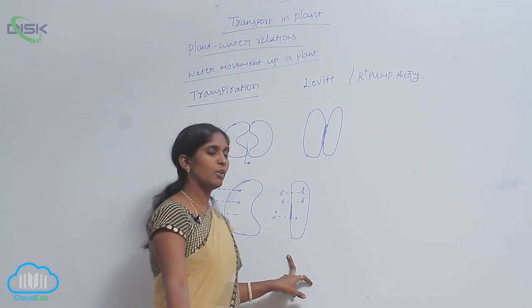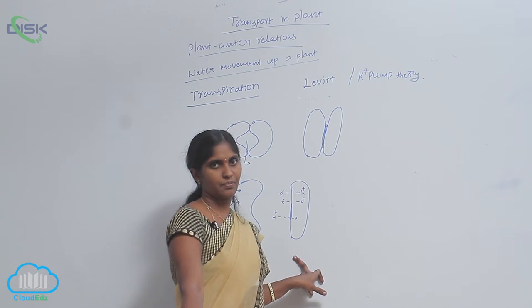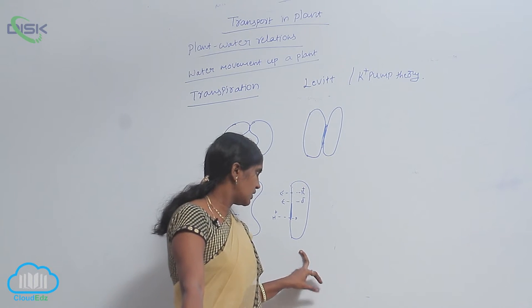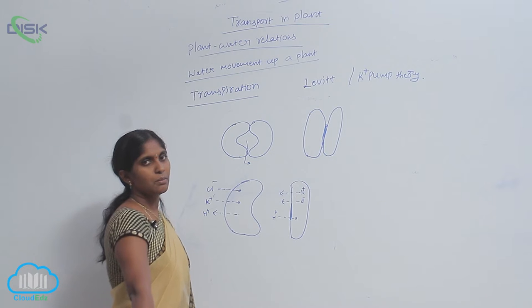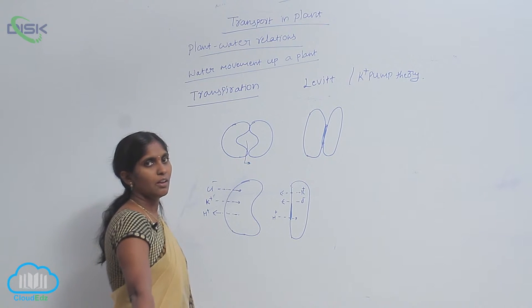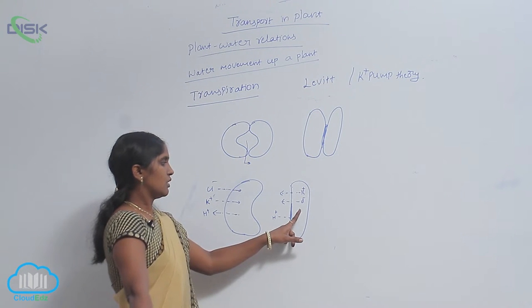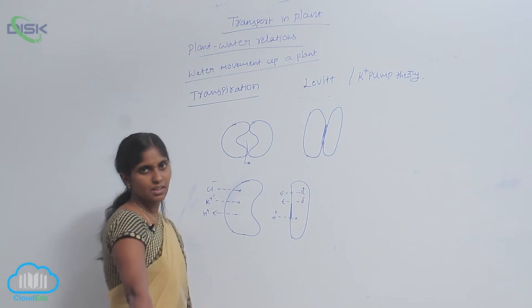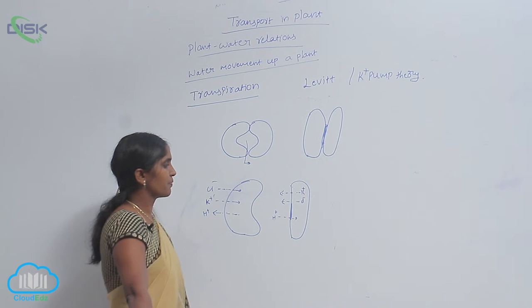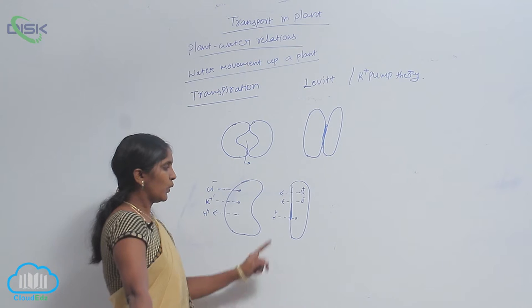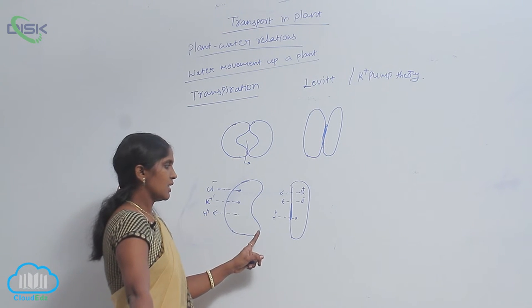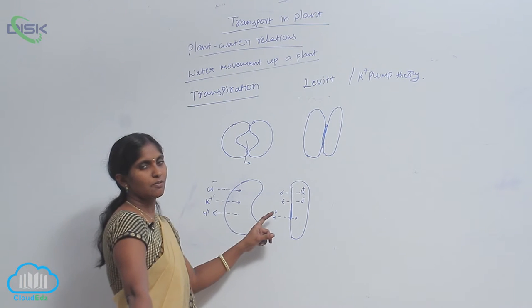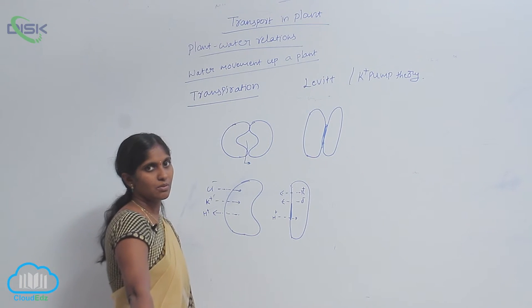What happened in night? During night, K+ ions and Cl- ions are effluxed to the subsidiary cells from the guard cells. When they are transported towards the subsidiary cells, the H+ ions are influxed into the guard cells.